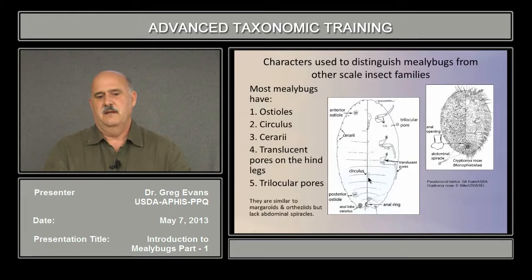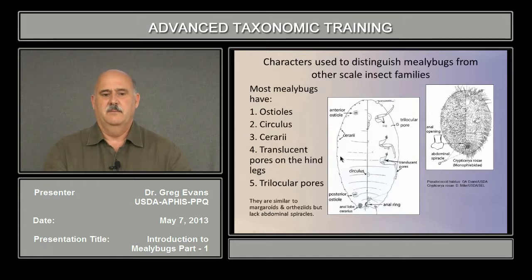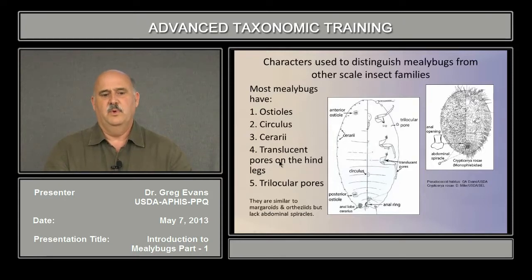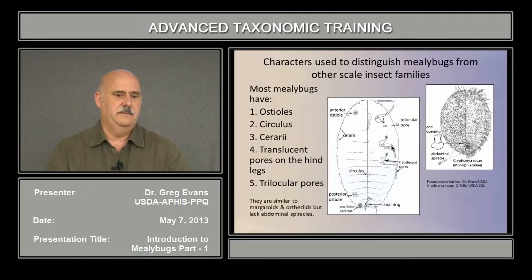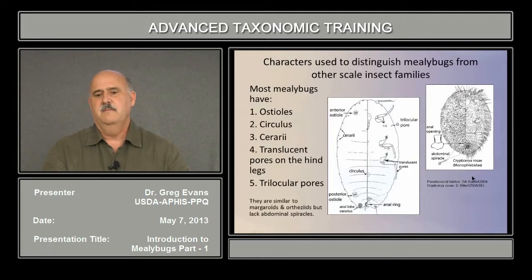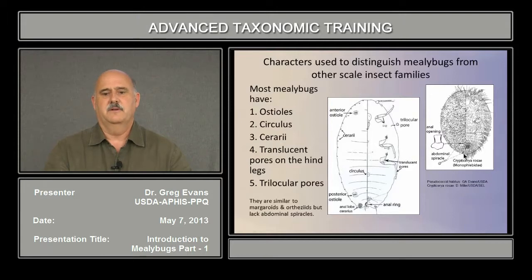Many species also have a circulus on the venter side around the third or fourth abdominal segment. Another important character is the cerarii, found along the lateral margin of the mealybug — these are unique to mealybugs. Trilocular pores are also unique to mealybugs. They're often confused with margarotids and orthesids because of similar shape, but those groups have abdominal spiracles along the posterior margin.